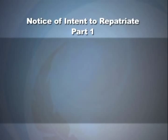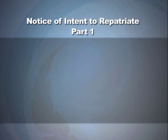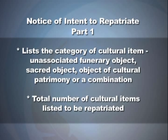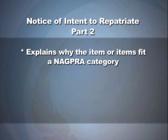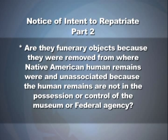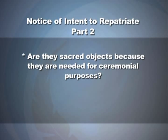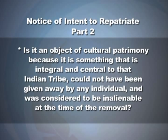Part 1 of a Notice of Intent to Repatriate lists the category of cultural item — unassociated funerary object, sacred object, object of cultural patrimony, or combination — as well as the total number of cultural items to be repatriated. The second part explains why the item fits a NAGPRA category: Are they funerary objects because they were removed from where Native American human remains were, and unassociated because the human remains are no longer in the possession or control of the museum? Are they sacred objects because they are needed for ceremonial purposes? Is it an object of cultural patrimony because it is integral and central to the Indian tribe and could not have been given away by any individual?